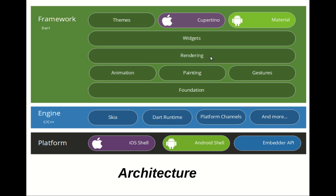Rendering is the process used to develop applications. Animation is the process of showing a series of images — like cartoons, which are a series of images shown in sequence. Painting is also possible. Gestures are the way for a user to interact with the mobile, such as tap, double tap, scroll down, scroll up, left swipe, and right swipe — these gesture functions are provided by default and can be used directly. Foundation provides support for the whole framework.